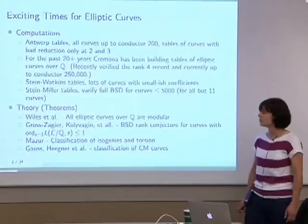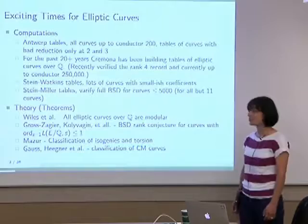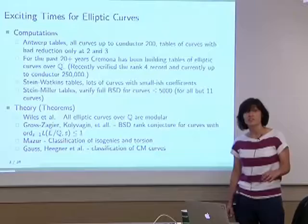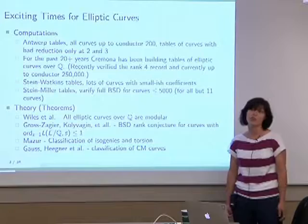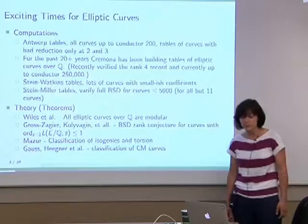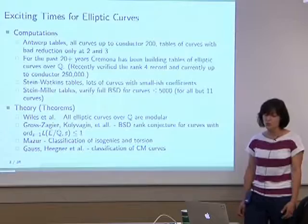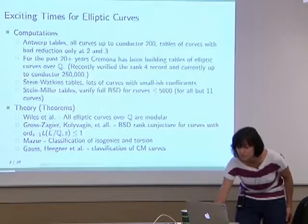Recently there have also been some big theorems on the elliptic curve side. There's been Weil's theorem — all elliptic curves are modular. Then there have also been theorems by Kolyvagin and others that give us the BSD rank conjecture for curves where the order of the L-function at 1 is ≤ 1, so we have the BSD rank conjecture for curves of rank 0 or 1. And there's been Mazur, who classified isogenies and torsion, and also the classification of CM curves.